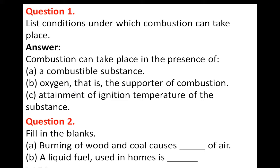Question 1: List the conditions under which combustion can take place. Answer: Combustion can take place in the presence of a combustible substance, oxygen as the supporter of combustion, and attainment of the ignition temperature of the substance. The substance should be combustible, have access to oxygen, and attain its ignition temperature so that it can burn.